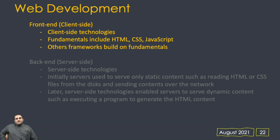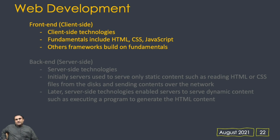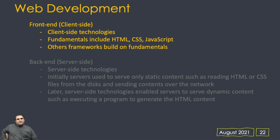Now let's discuss the modern web development landscape. We have two sides: the front end and the back end. The front end is the client side. As a developer one can go to the client side, or to the server side, or be a full-stack developer. The fundamental client-side technologies include HTML, CSS, and JavaScript — the rest of the technologies and frameworks build on these fundamentals.